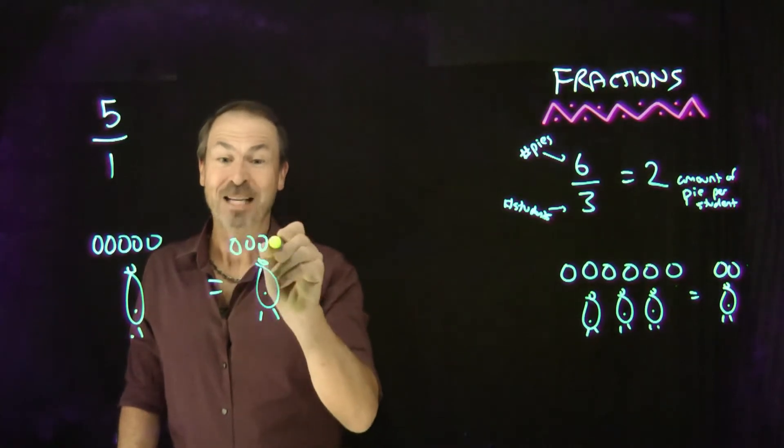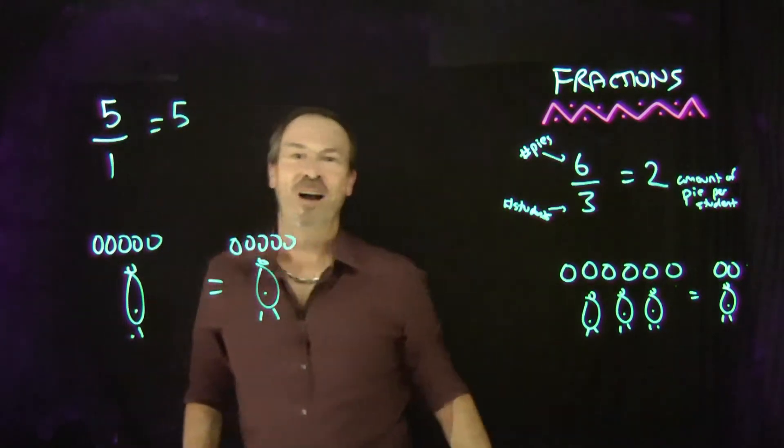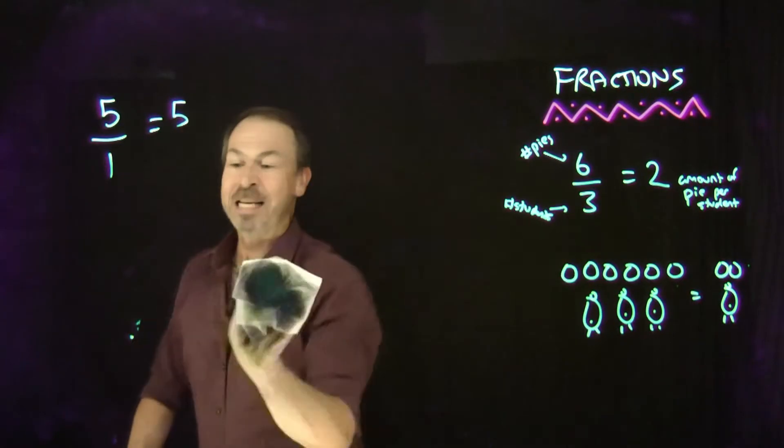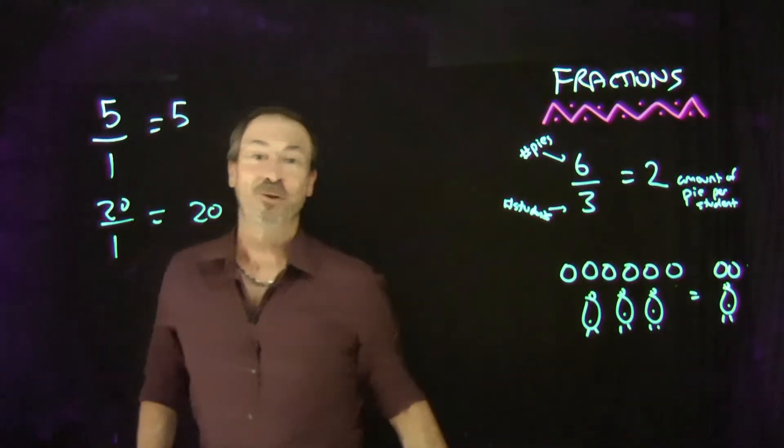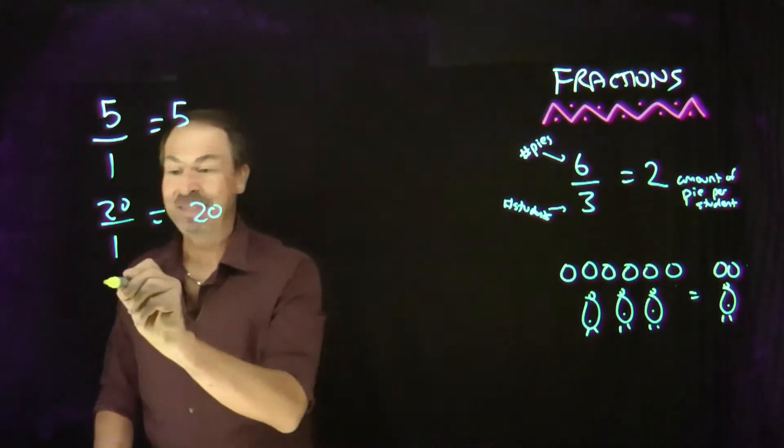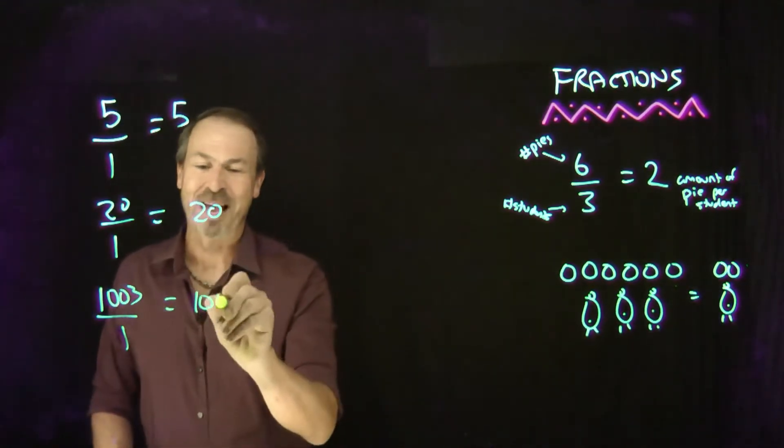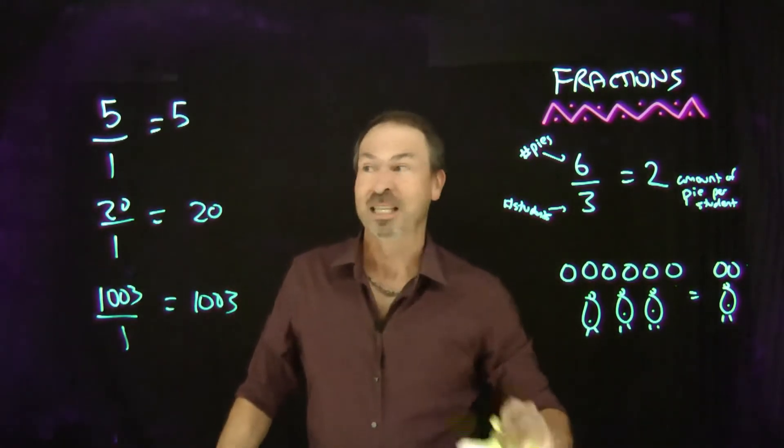Well, that would be those 5 pies—5 pies per student. 5 pies for one student is 5 pies per student. In the same way, if I had an even luckier student, say 20 pies for that one student, 20 pies for one student makes 20 pies per student. Or 1,003 pies for an exceptionally lucky student makes 4,003 pies per student. So it's very clear in this model here that we have a principle.